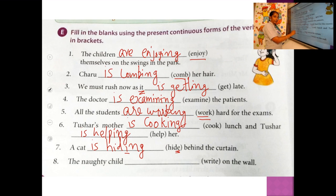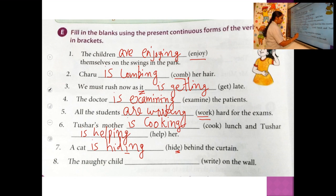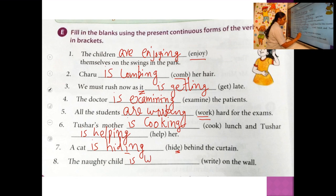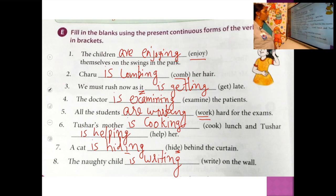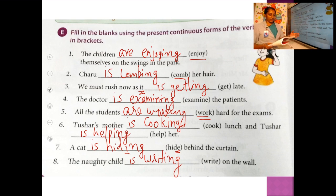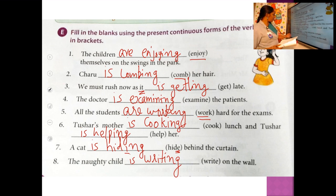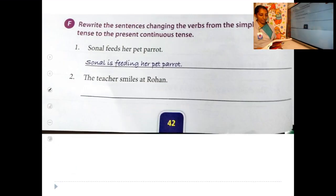The last sentence: 'The naughty child dash on the wall.' The naughty child is singular — the naughty child is writing on the wall. The answers for exercise E are: 1. are enjoying, 2. is combing, 3. is getting, 4. is examining, 5. are working, 6. is cooking / is helping, 7. is hiding, 8. is writing.